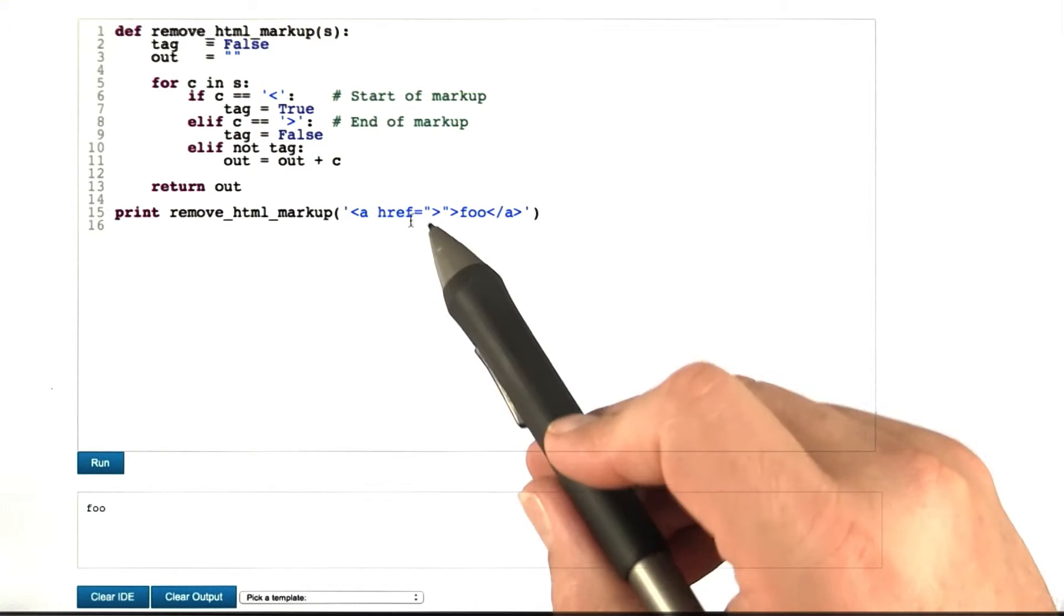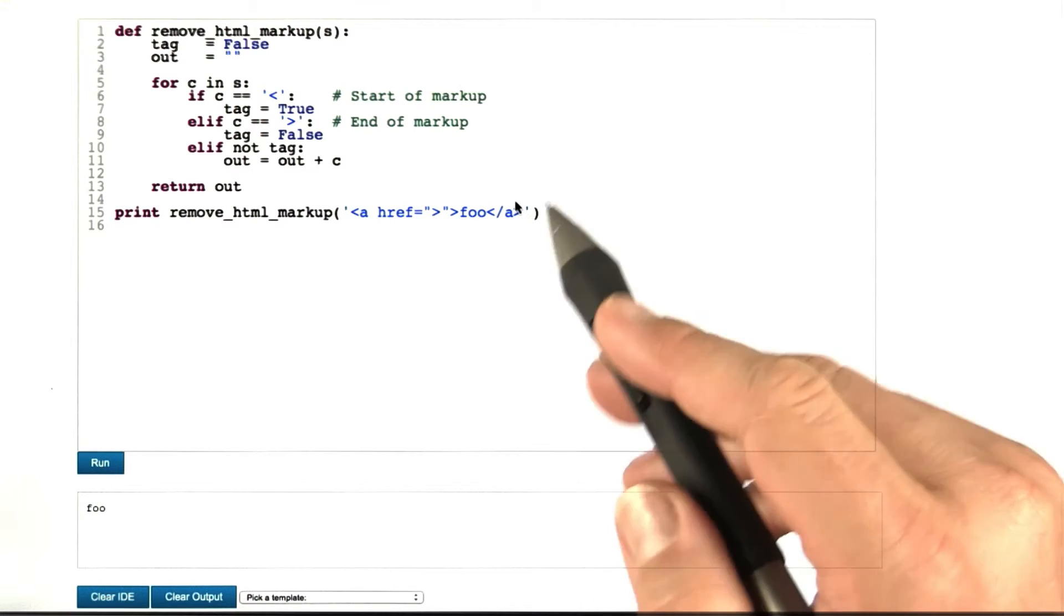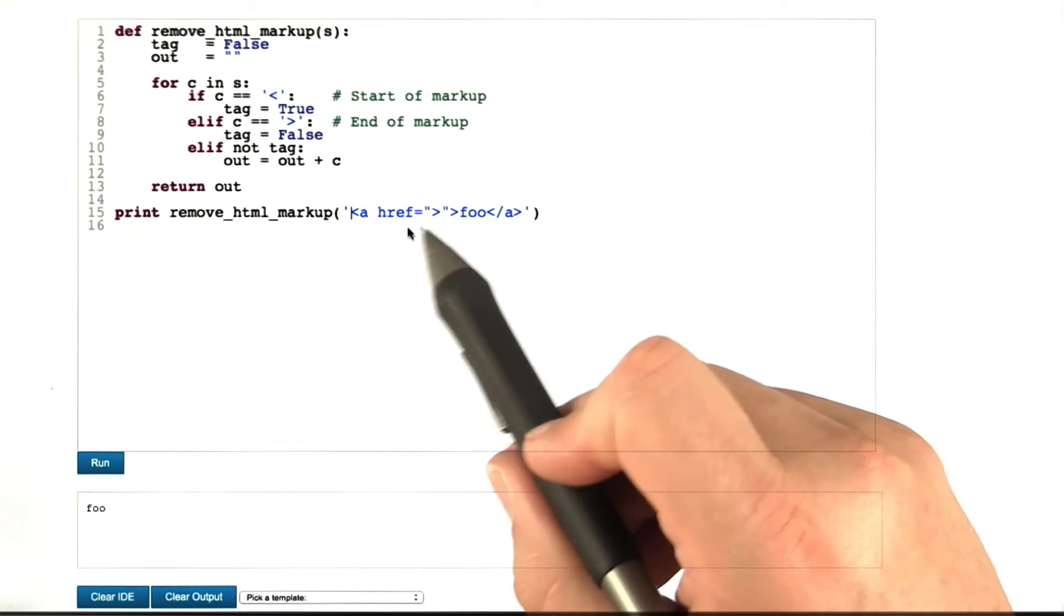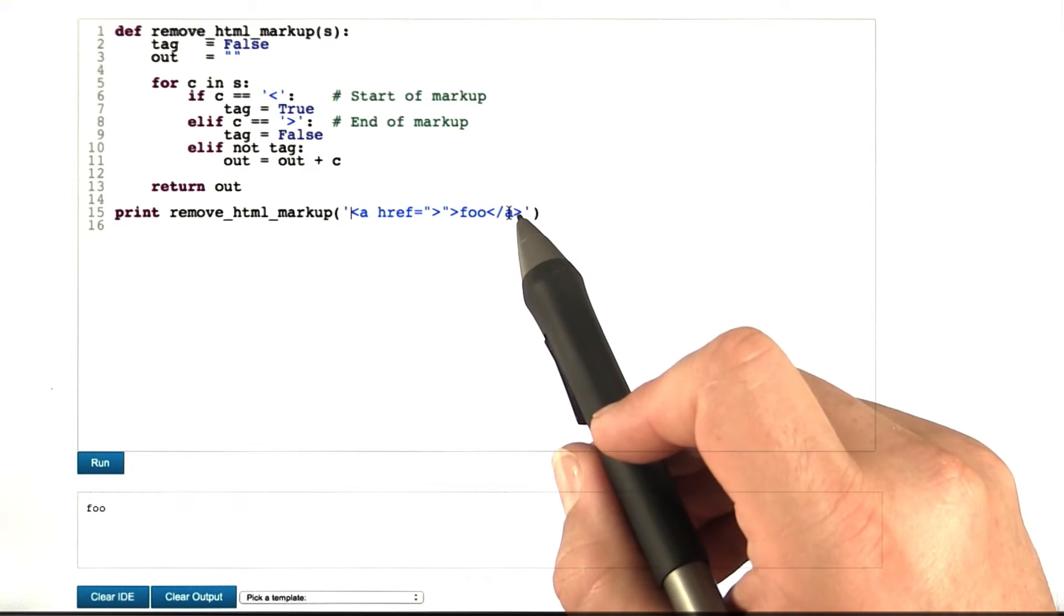Rule of thumb: if your string contains double quotes, use single quotes as string delimiters. If your string contains single quotes, use double quotes as delimiters. If there's no quotes in your string, feel free whatever you like.